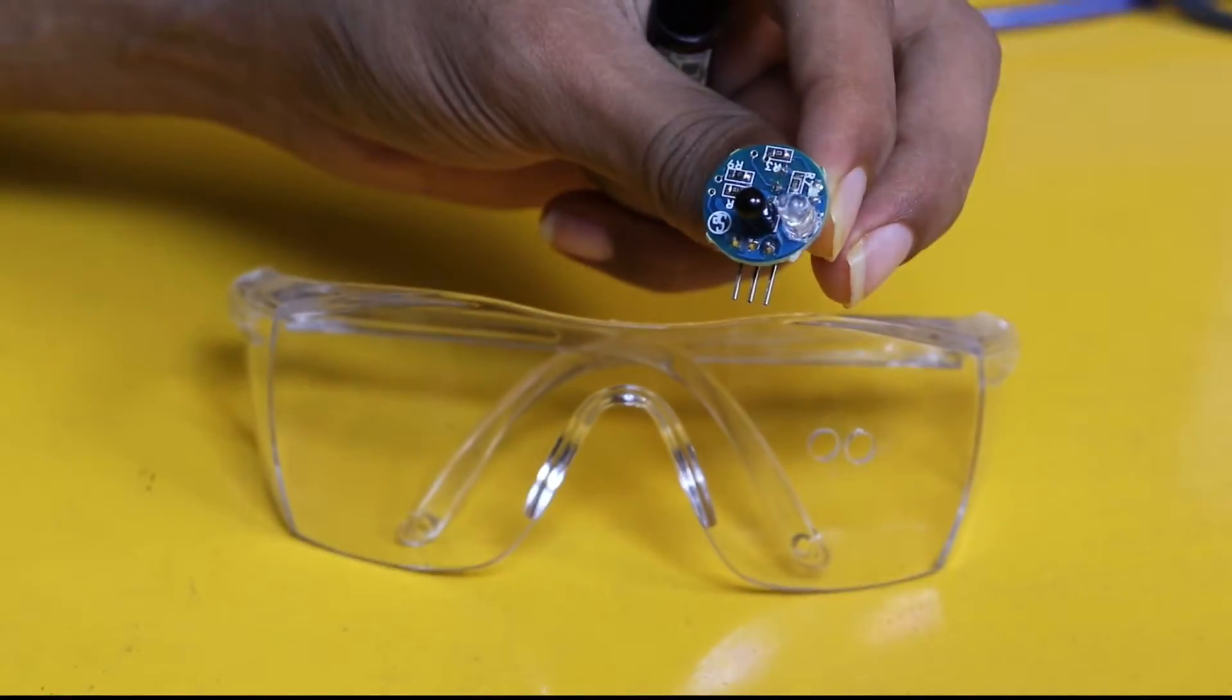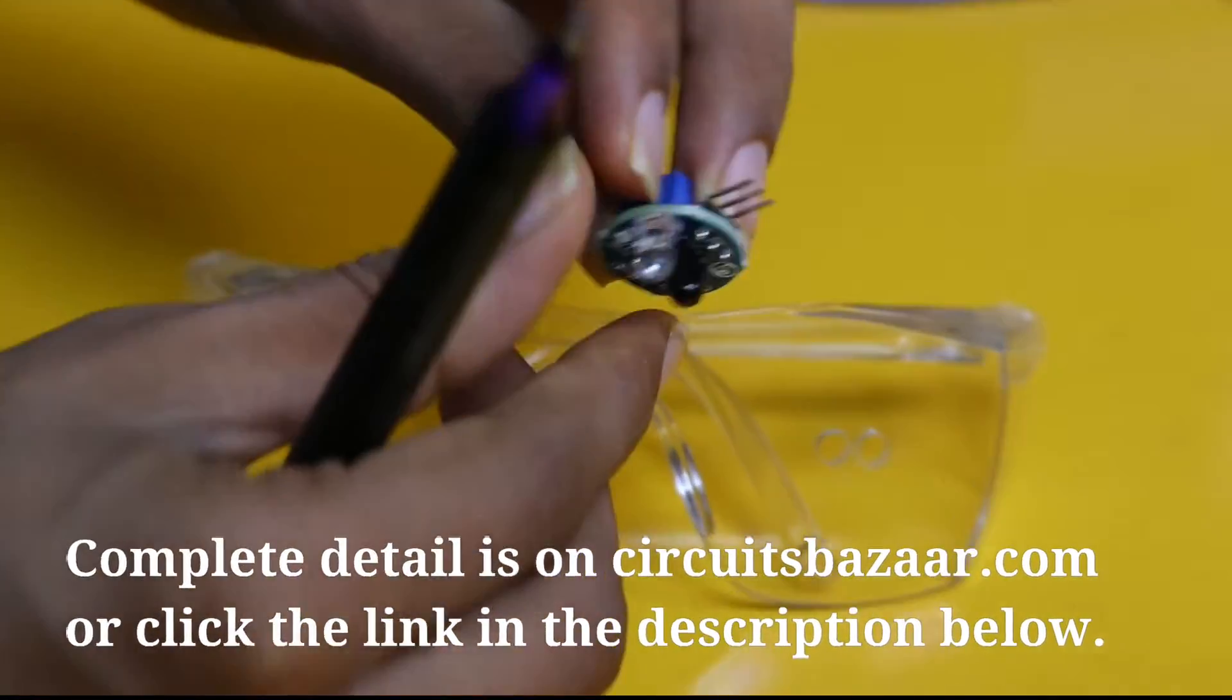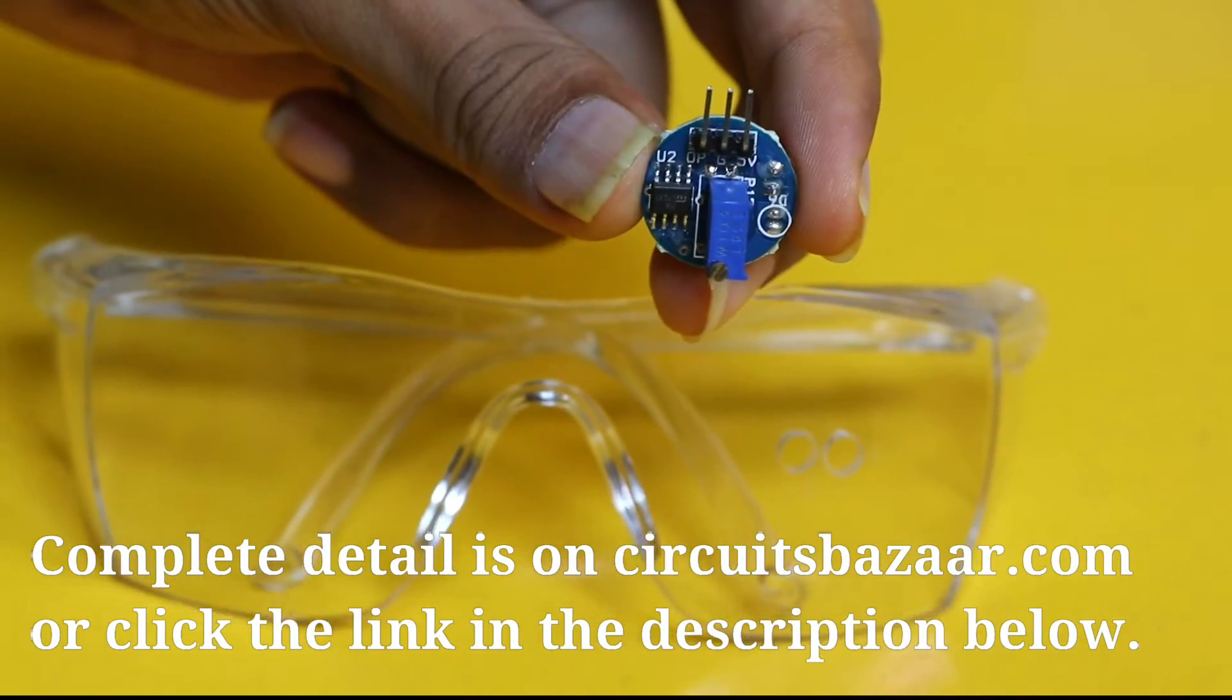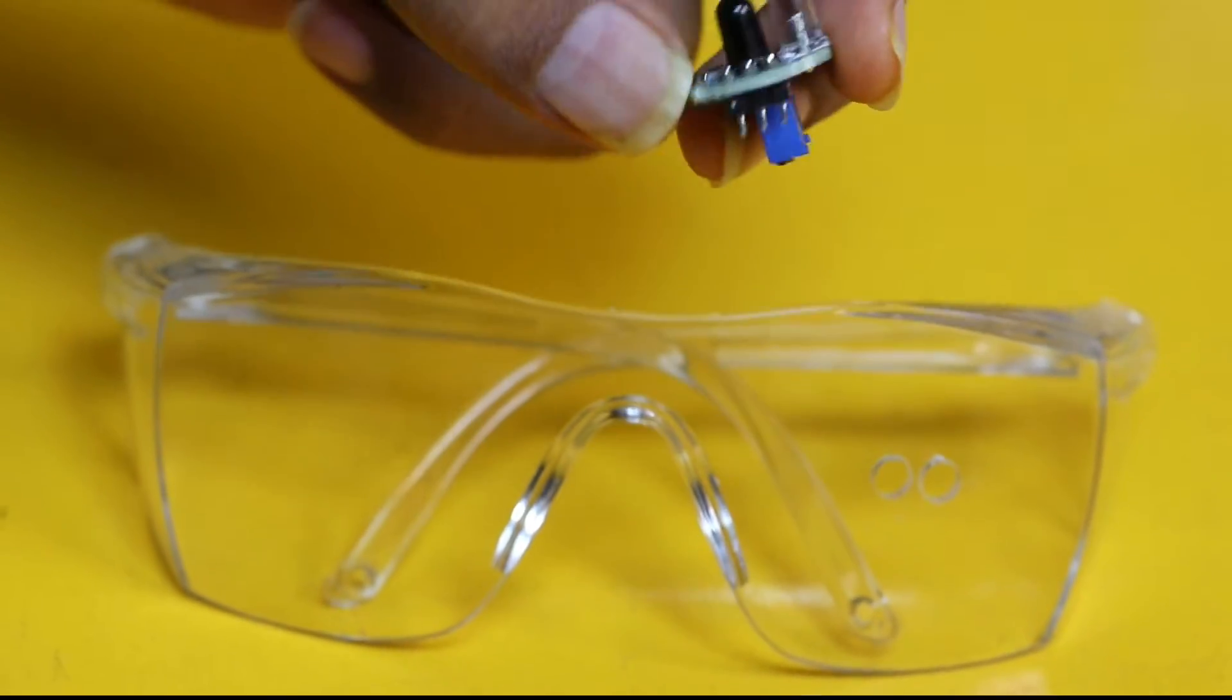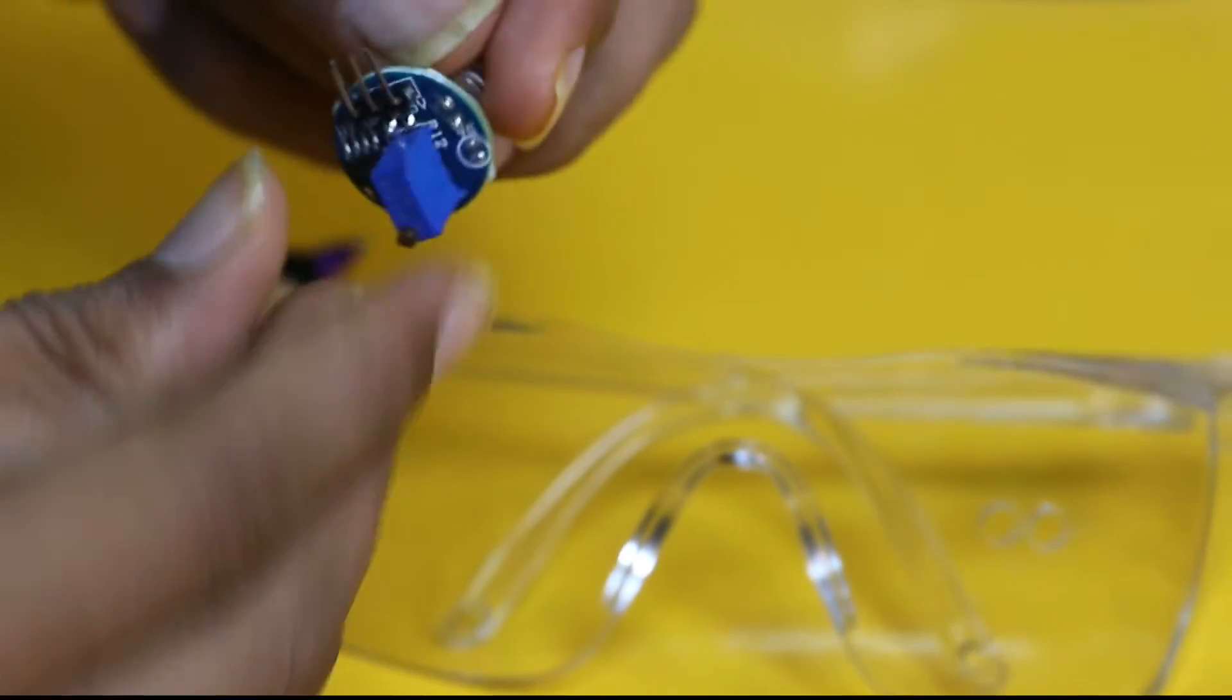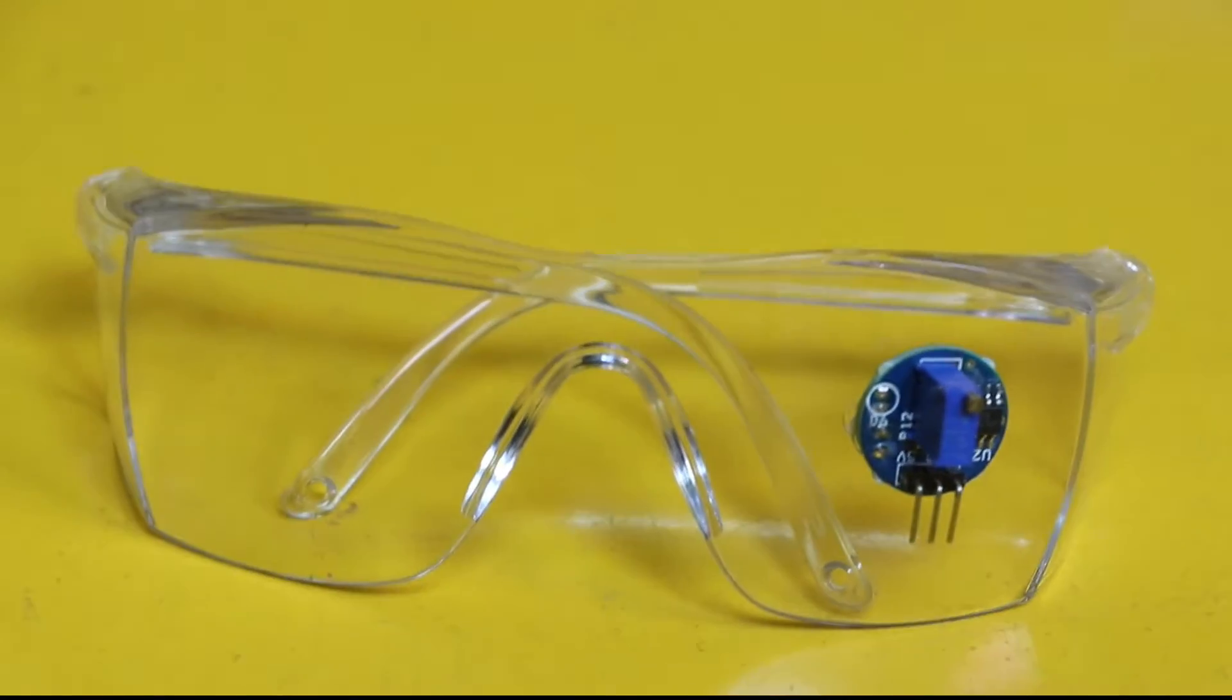These two LEDs are an IR pair - one is transmitter, another is receiver. If you look behind, there is a potentiometer. This blue color potentiometer you can use to set the sensitivity of the eye blink sensor. You can manage the distance of your eyes from the goggles and just fit it over here on this transparent goggle.